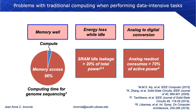There are problems with traditional computing when performing data-intensive tasks. The first is the memory wall, where for data-intensive tasks such as genome sequencing, memory access can dominate as much as 96% of computing time. There is also high energy loss when computers are idle — SRAM idle leakage can consume 20% of total power. Additionally, converting from analog to digital information can consume as much as 70% of active power, which is especially problematic for Internet of Things or real-time learning applications.